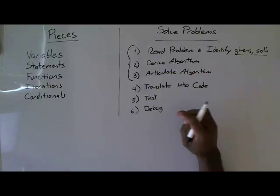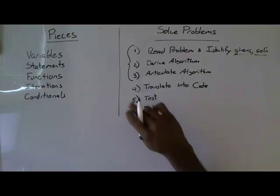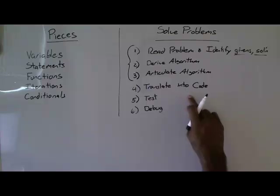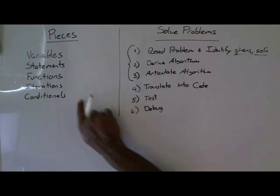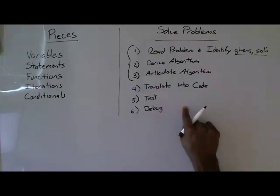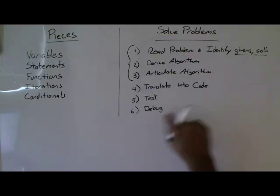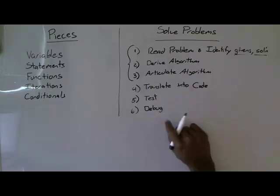So when you debug, you have to go back and continually figure out why is my translated solution not working. Now it may be that you didn't translate it right. It may be that you're misusing these pieces over here to get your answer. Or it may be that your original algorithm might not be correct.